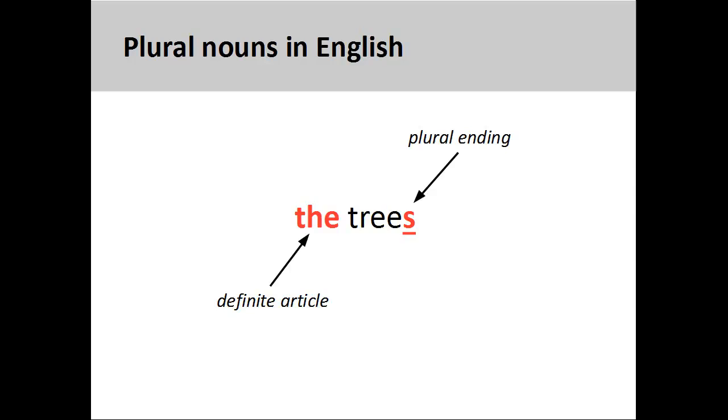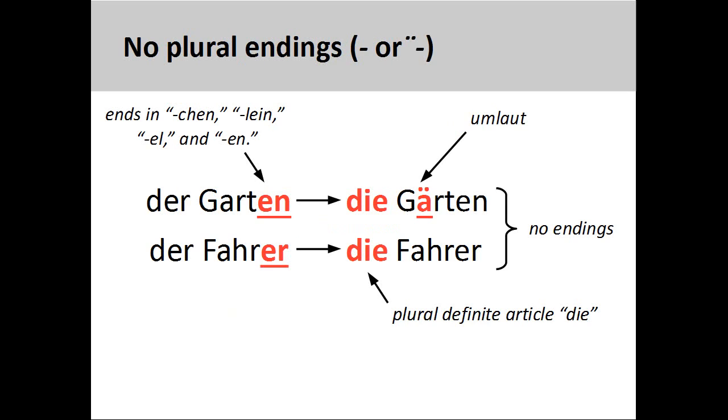There are, however, some basic rules that can help us. Let's take a look at them now. Plural endings in German can be organized into roughly five groups. It is very important to memorize these endings when you memorize the gender of a noun.